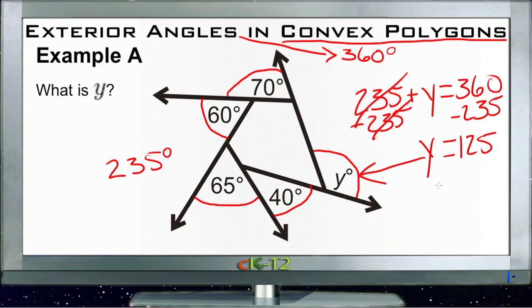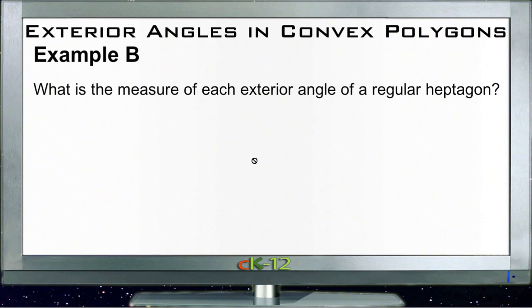So angle y over here must be 125 degrees so that the total of all those exterior angles can be the 360 they're supposed to be. Let's take a look at Example B. Example B asks what is the measure of each exterior angle of a regular heptagon.